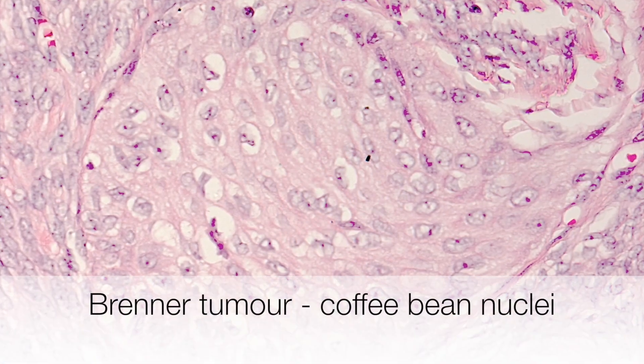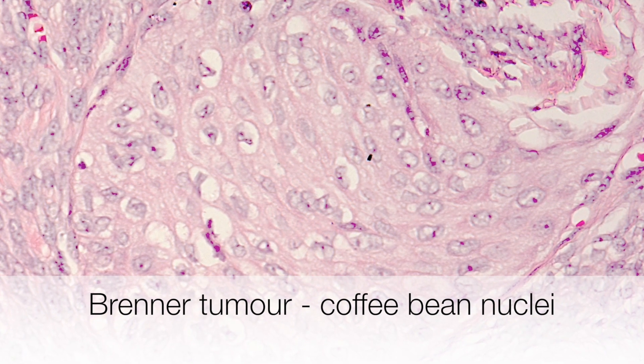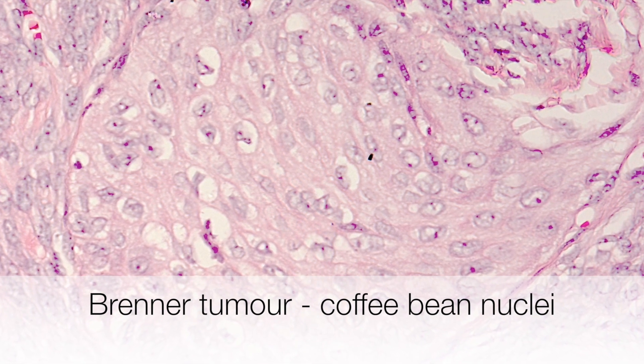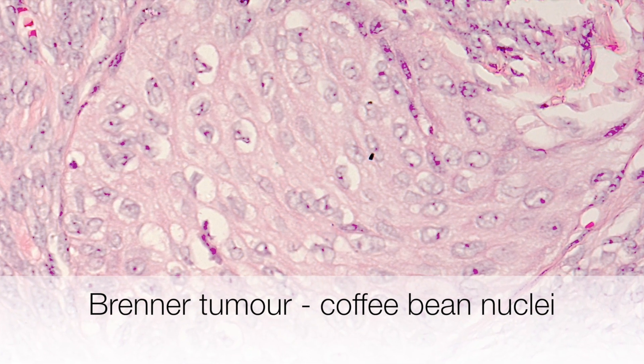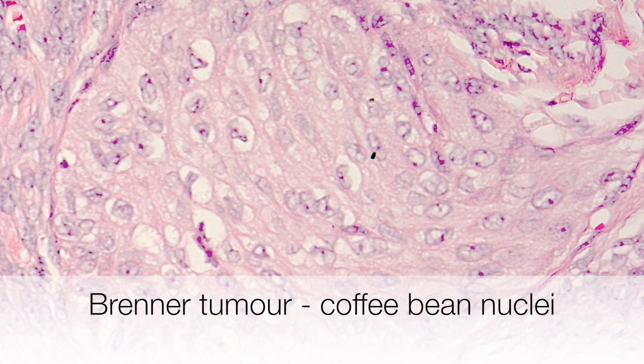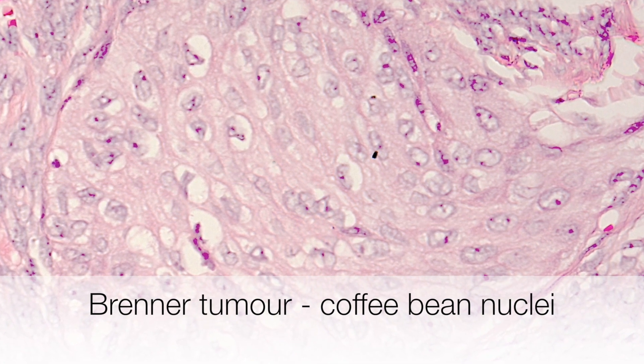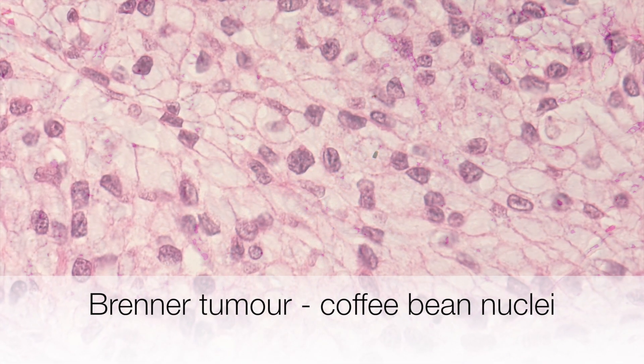The ovarian tumour characterised by cells containing coffee bean nuclei is the Brenner tumour. This is a type of sex-cord tumour of the ovary.